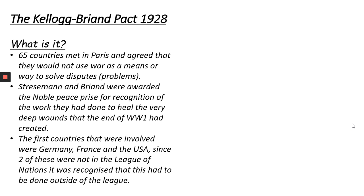The second one we're going to look at is the Kellogg-Briand Pact of 1928. This is where 65 countries met in Paris and agreed they would not use war as a means of solving disputes — so we're not going to fight to end our problems. This is really important because it brings out peaceful negotiation and makes other countries want to get involved. The first countries involved were Germany, France, and America. Since two of these were not in the League of Nations, it was recognised this had to be done outside of the League.